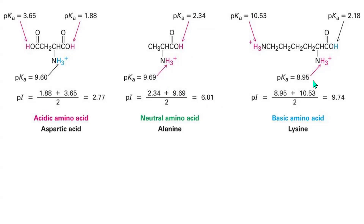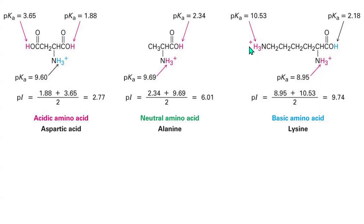For the basic case, the pKa for the carboxyl group is not relevant, so you are not taking it. That is where we have pKa here as 10.53, and then we have pKa as 9.74. We are taking it for just the amino group, so we have pKa as 10.53 and pKa as 8.95. We take the amino group values and we have the average as 9.74, neglecting that of the carboxyl group.